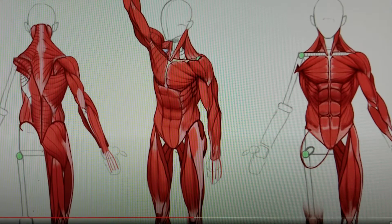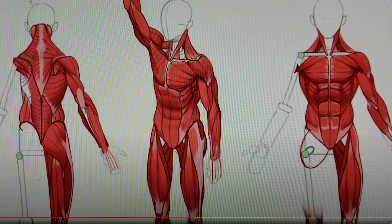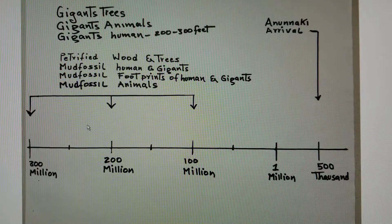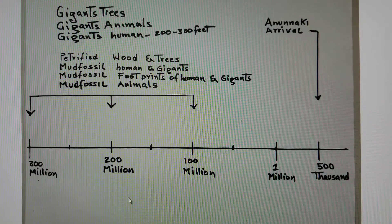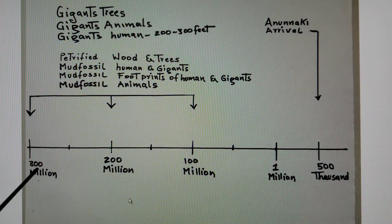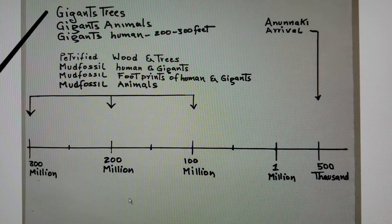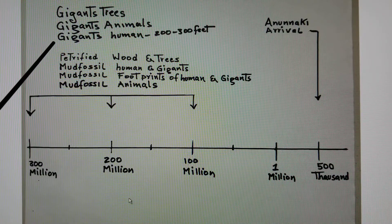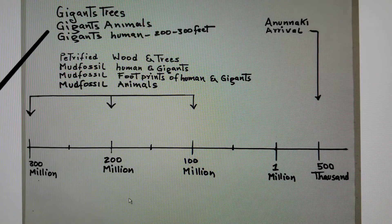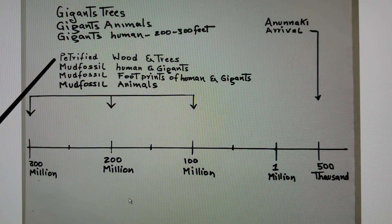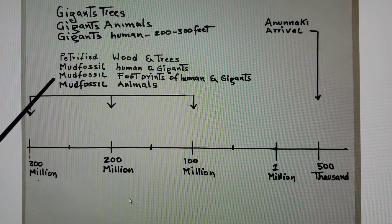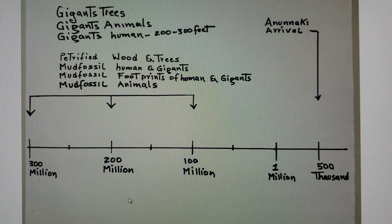We're going to make a video about giants on planet Earth and talk about the tissue of humans. On planet Earth there was a civilization a long time ago — everything was giant. Earth was a planet of giants from 100 million to 300 million years ago: giant trees, giant animals, giant humans of 200, 300, 400, 500 feet and even taller. The evidence includes petrified wood, mud fossils of human giants, mud fossil footprints, and mud fossil animals.